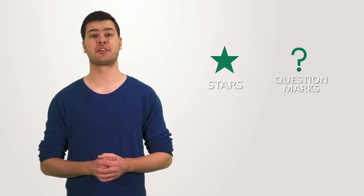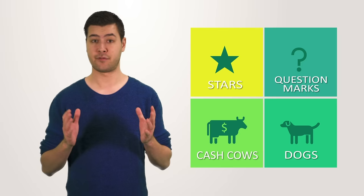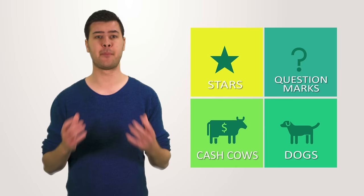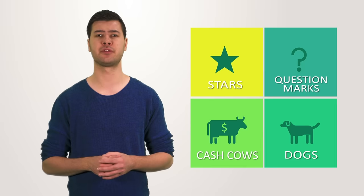The stars, the question marks, the cash cows and the dogs. Familiar terms if you've studied business or management. Together these four components form the basis of the BCG matrix, a tool used in corporate strategy. Let's dive a little bit deeper today into what this framework really does.